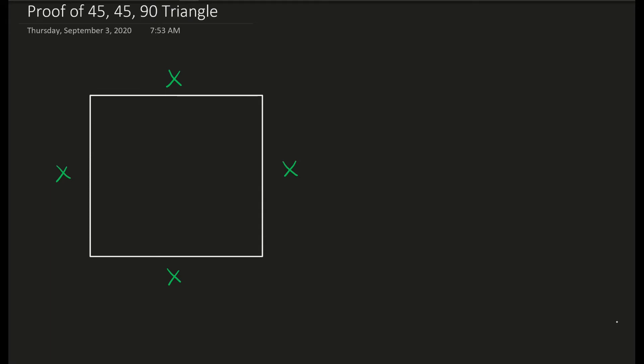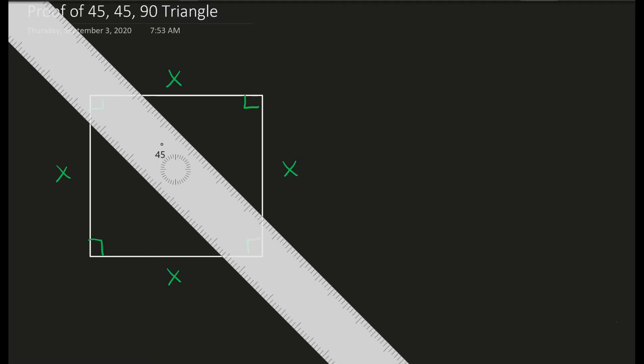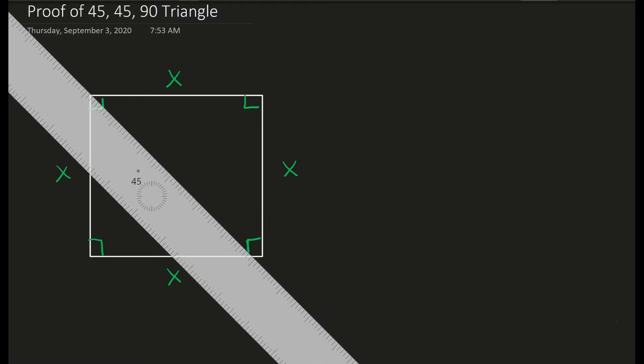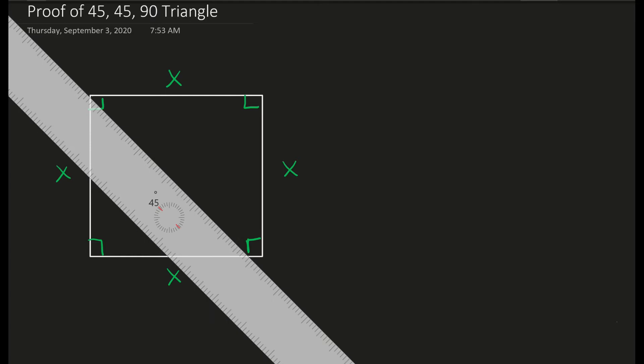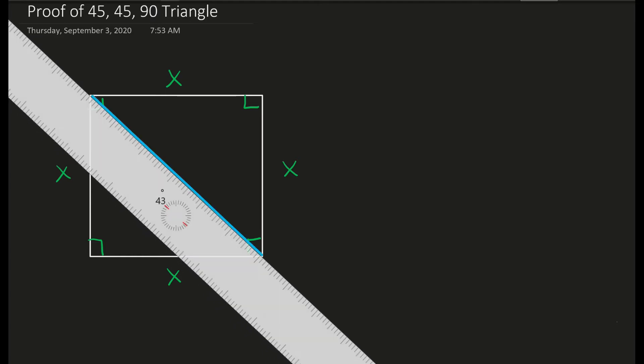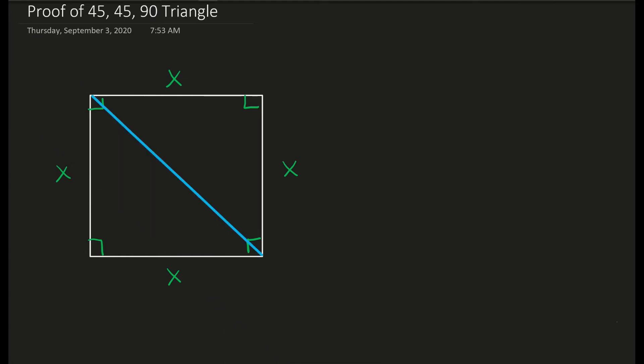In a square, you have four right angles. A way that you generate a 45-45-90 triangle is you come in and draw a diagonal inside of a square. And now I have a 45-45 isosceles right triangle.